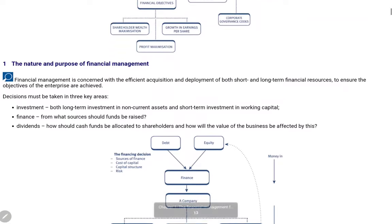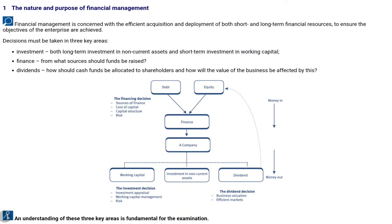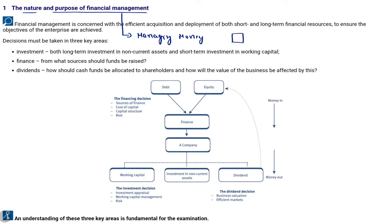Let's start with Chapter 1: Financial Management Function. Our first topic is the nature and purpose of financial management. Simply put, financial management means managing money. Whatever company we have, the financial manager — the person taking care of finance — needs to manage money flowing through the company in three main ways.